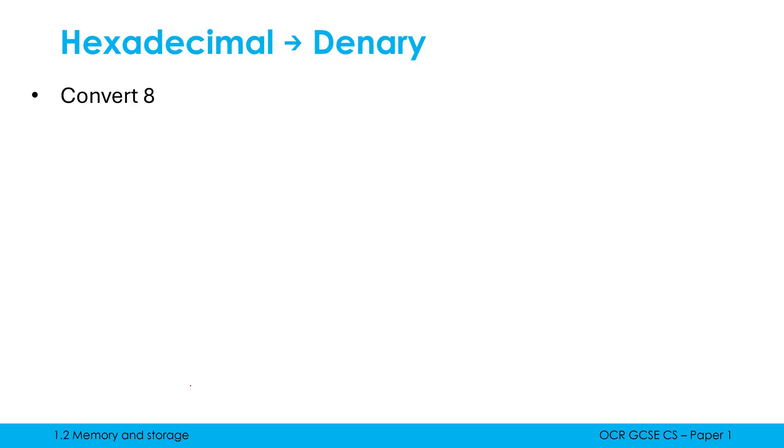Just to start with the easiest possible question you could get. Here we're converting from hexadecimal to denary. Just to remind you that 0 to 9 in hex and denary are exactly the same. So if I'm converting 8 from hexadecimal to denary it is just still 8 because they are exactly the same between 0 and 9.